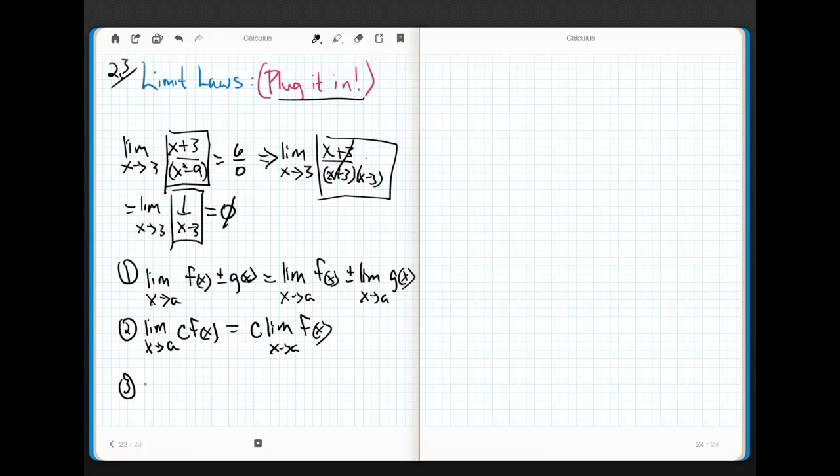Number three is the limit of the product. The limit as x approaches a of f of x times g of x equals the product of the limits. Now you may ask yourself, why are these limits here if they're so intuitive? Well, remember, it's mathematics. We've got to make sure we dot all the i's and cross all the t's. So now we have these laws that say I can bust a limit up if I've got a product, a sum, or a constant.